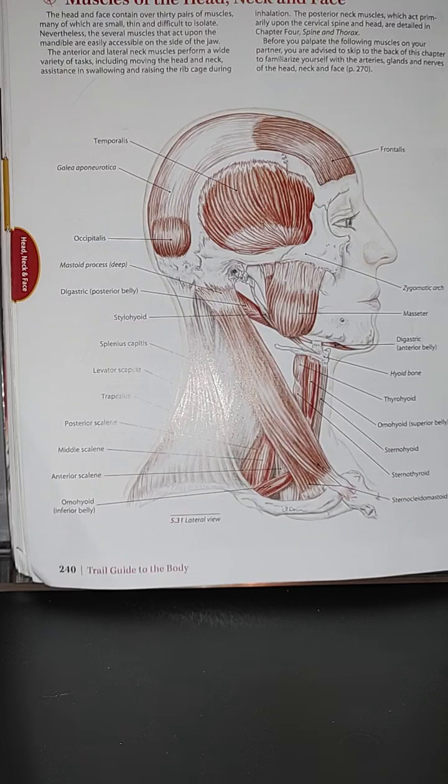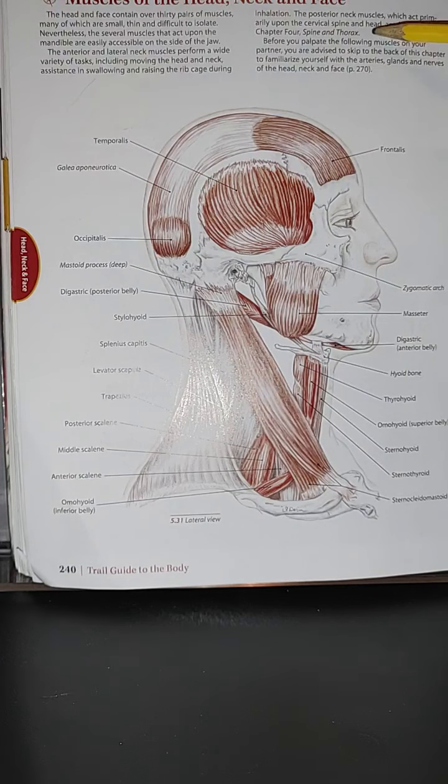The posterior neck muscles, which act primarily upon the cervical spine and head, are detailed in chapter 4, spine and thorax, which we have actually covered.